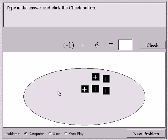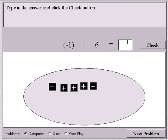So do I have any more positive and negatives to match up? And the answer is no. So my answer is 1, 2, 3, 4, 5. So negative 1 plus 6 is positive 5.